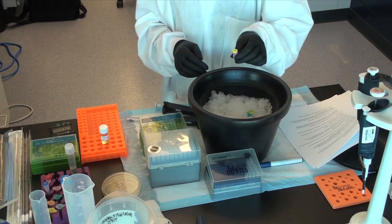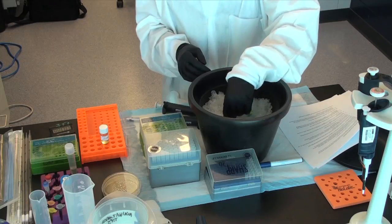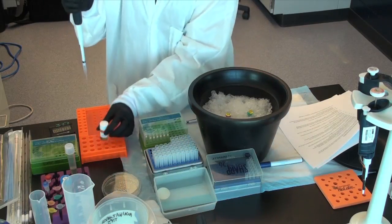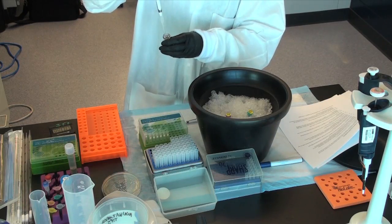Step 9: Remove the vial from the 42 degrees Celsius bath or block and quickly place it on ice for one minute. Step 10: Add the appropriate volume, 250 microliters, of pre-warmed SOC medium to each vial.